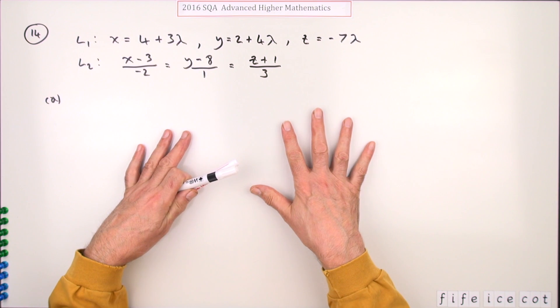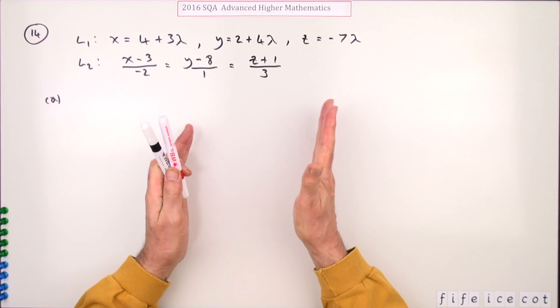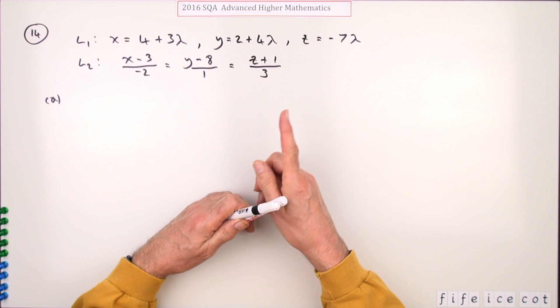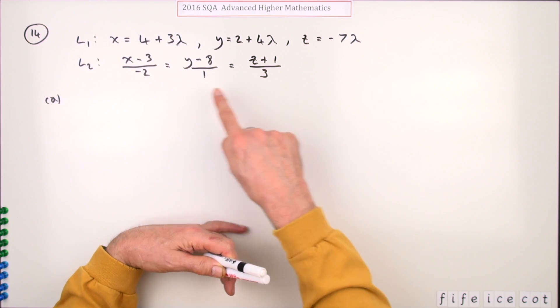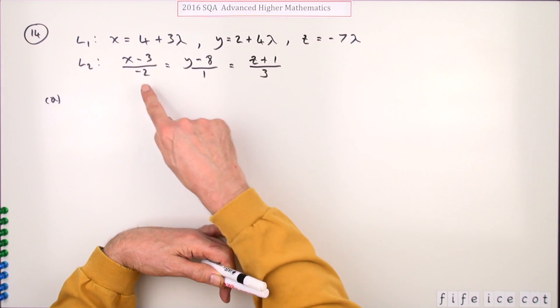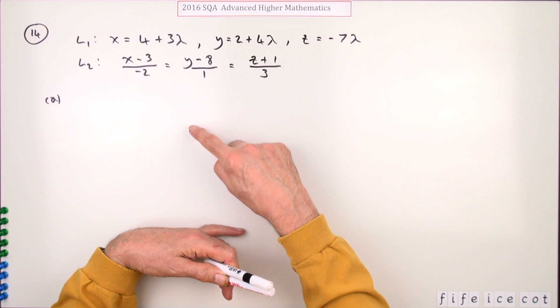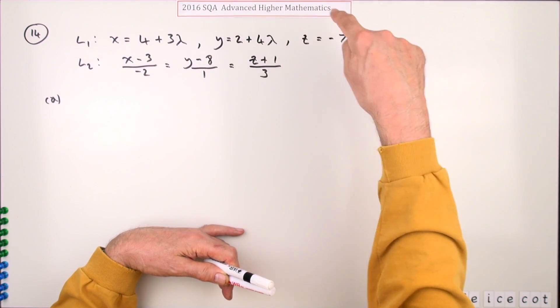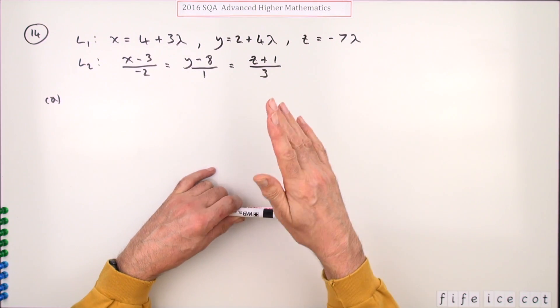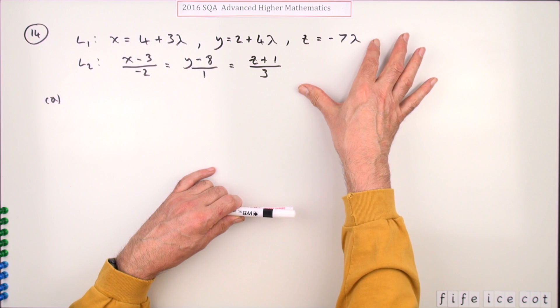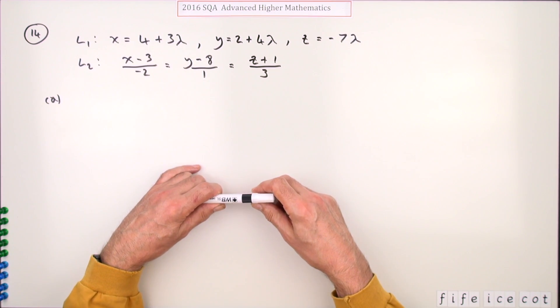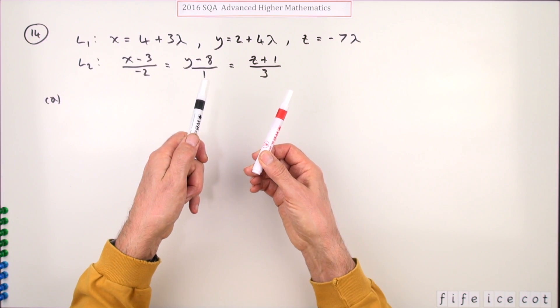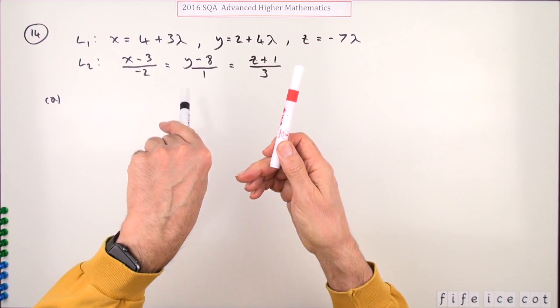In the plane, two lines will intersect as long as they're not parallel. It's the same here - they've got the chance of intersecting. You usually check if they're parallel by looking if their vectors are multiples of each other: negative 2, 1, 3 and 3, 4, negative 7 - they're not. But in three dimensions, just because they aren't parallel doesn't mean they will intersect. More often than not, two non-parallel lines in three dimensions miss each other - skew lines.